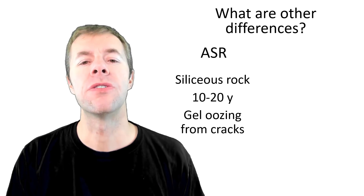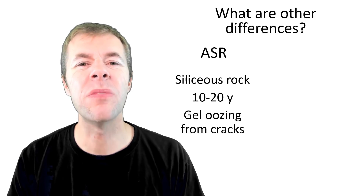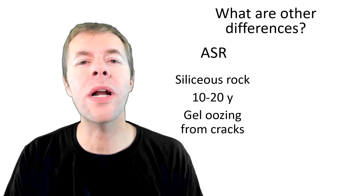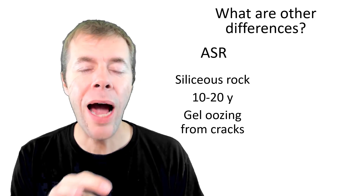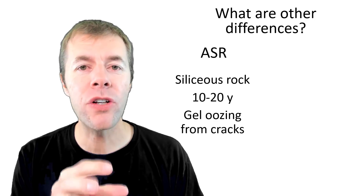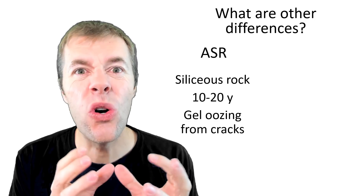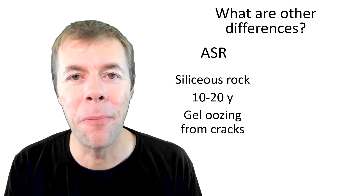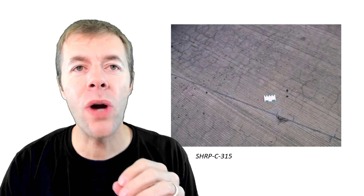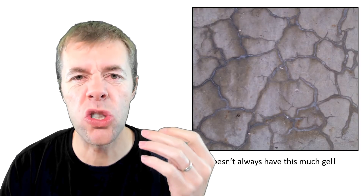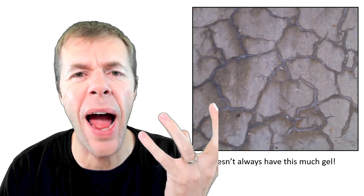What are some other differences? With ASR, you've got to have a certain kind of rock — it's got to be siliceous in nature. Usually ASR happens after 10 to 20 years of service, depending on how moist and how hot it is where you live. And when cracks get really extreme, gel starts oozing out of them. ASR cracks will start out looking like this, with some stains or outlines around the cracks, and then over time gel starts shooting or oozing out.